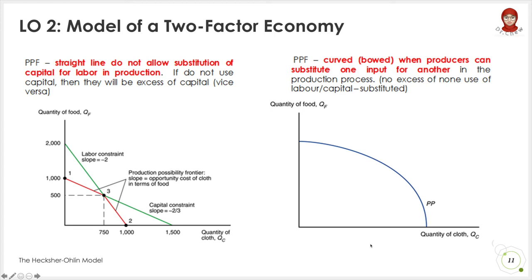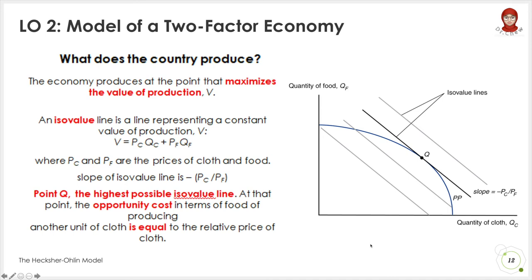Thus far we have discussed which inputs or mix of inputs to be used in production. So what does the country produce? The country produces at the point that maximizes the value of production. This is also the point on the highest possible ISO value line, as indicated in point two. At this point two, the opportunity cost for both goods are equal. The two-factor economy emphasizes the mobility of two factors of production as well as the combination of factor production, which can be different.